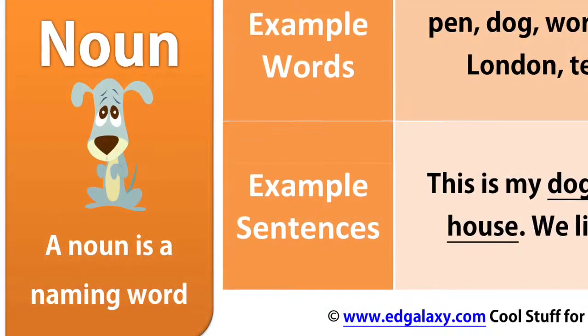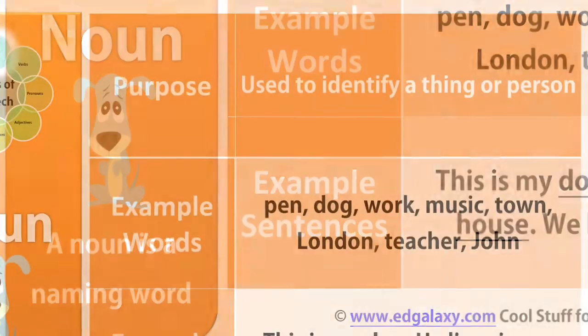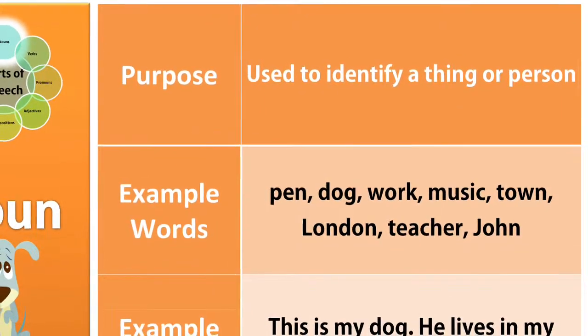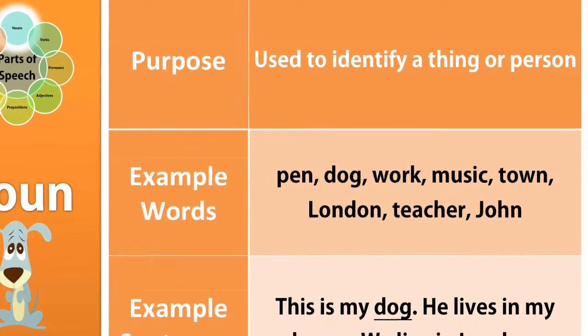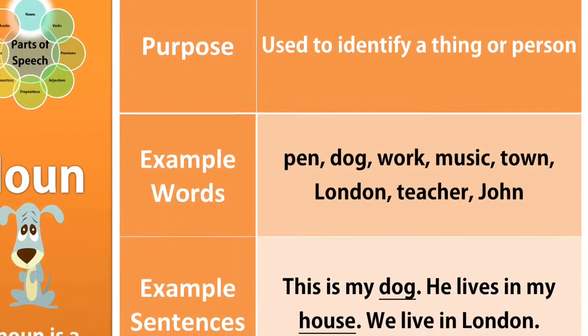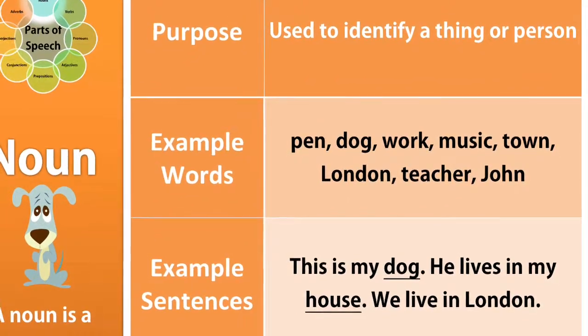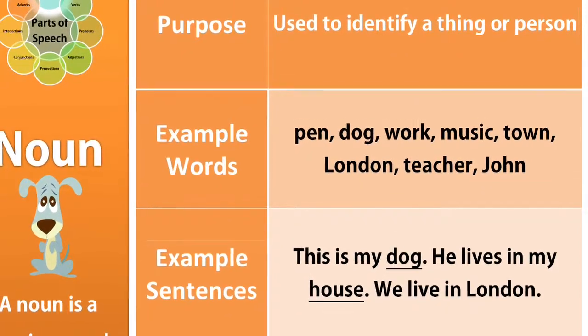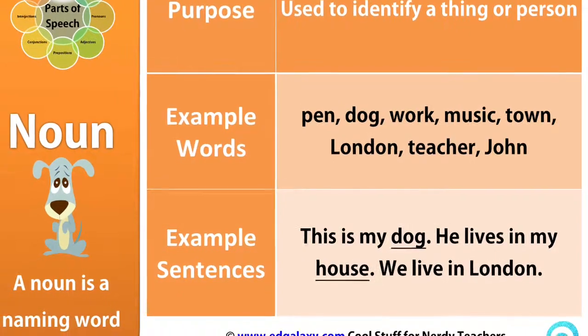What is a noun? A noun is a naming word. A noun's purpose is used to identify a thing or person. Example words are pen, dog, work, music, town, London, teacher, John. Example sentences: This is my dog. He lives in my house. We live in London.